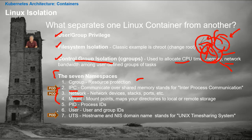Number six is users — the users and user group namespace. Each individual container has its own user and user group IDs, so they don't have to share rules; they can have their own. And lastly, each container can have its own hostname and DNS domain name.